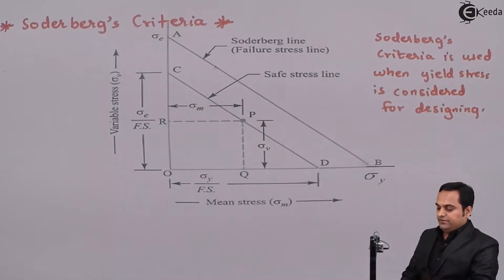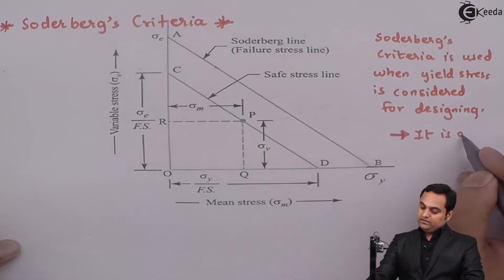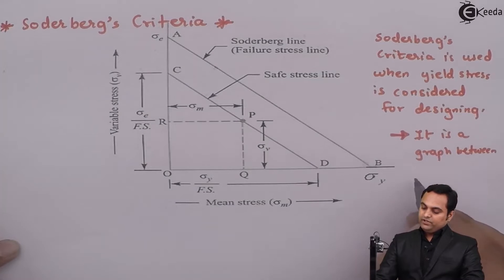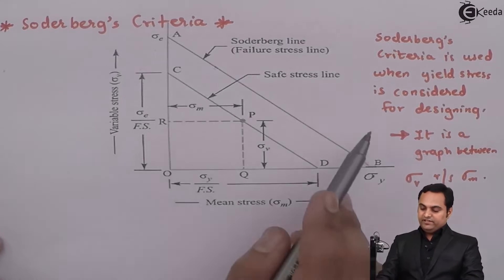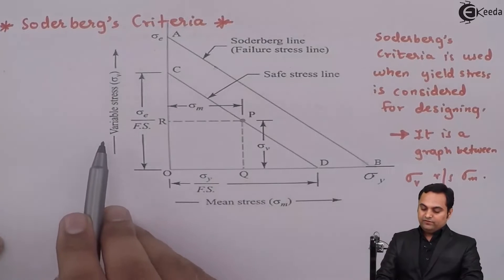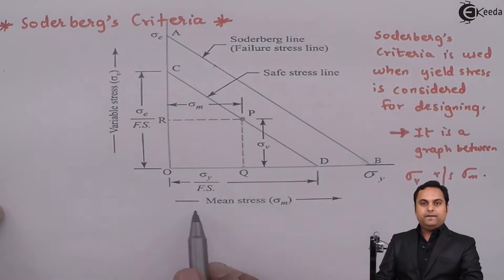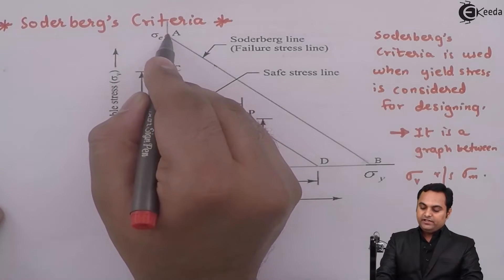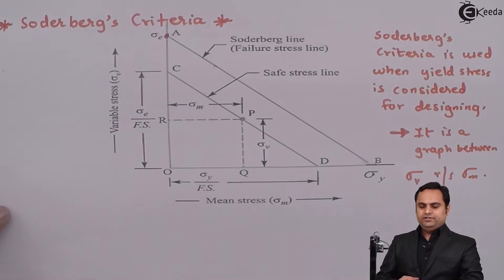Soderbergh's line considers yield stress and it is a graph between variable stress sigma_v versus the mean stress sigma_m. On the y-axis we have variable stress sigma_v, and on the x-axis we have mean stress sigma_m. The highest point on the y-axis is point A, where the stress is sigma_e, called the endurance stress.